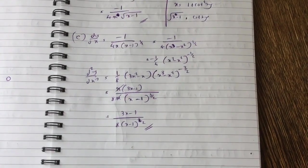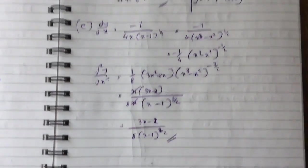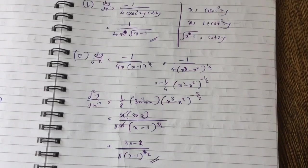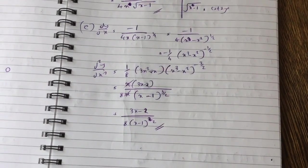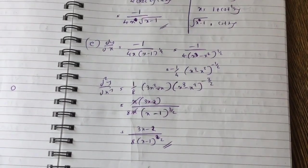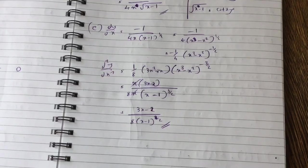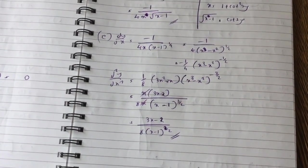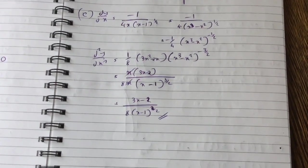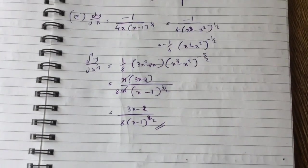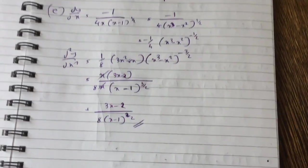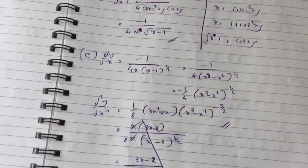So d²y/dx² = (1/8)(3x² − 2x) · (x³ − x²)^(−3/2). Actually, there is a mistake in this part of the question, so we'll cross that working out and leave dy/dx as the answer.